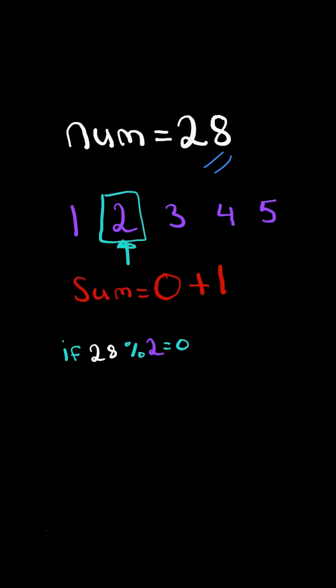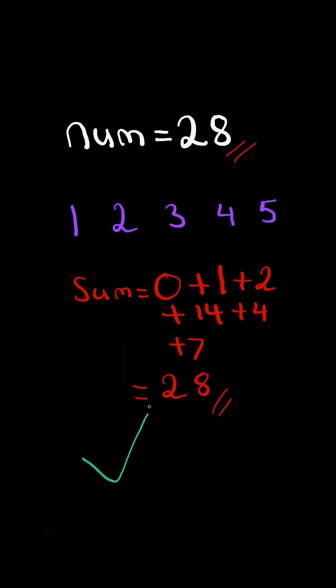2 is a divisor of 28, so we add it to our sum and find its pairing and add that to the sum as well. At the end, if sum equals the number, then it is a perfect number.